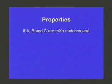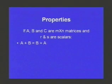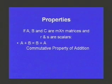There are also some properties in this section. If A, B, and C are M by N matrices, so they're all the same size, and R and S are scalars, so R and S are constants, A plus B is equal to B plus A. Just like with real numbers, if you add 2 real numbers, 2 plus 3, that's the same as 3 plus 2, the same applies to matrices. That was called the commutative property of addition, and that does apply to matrices.